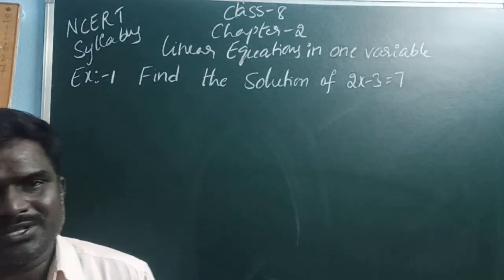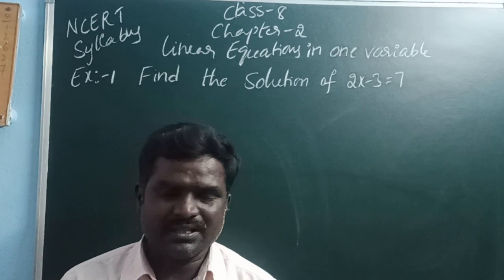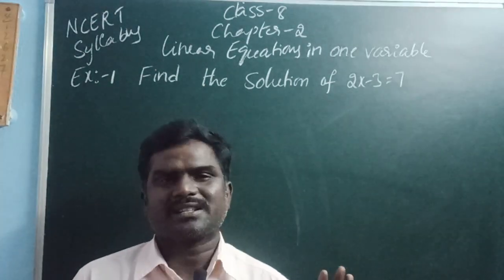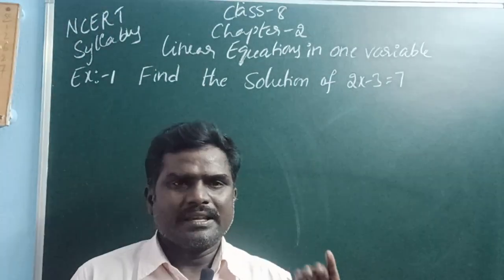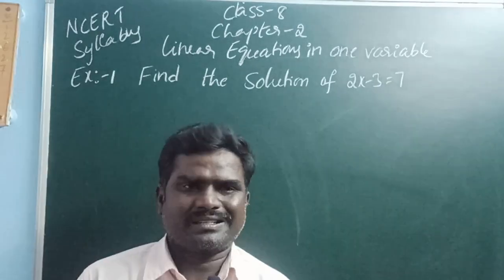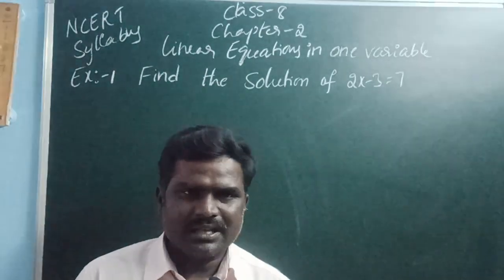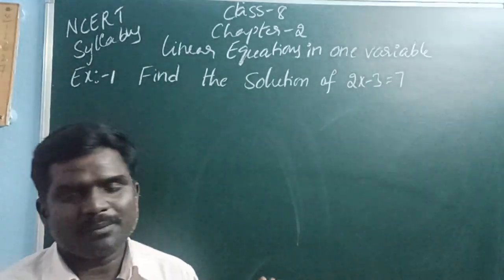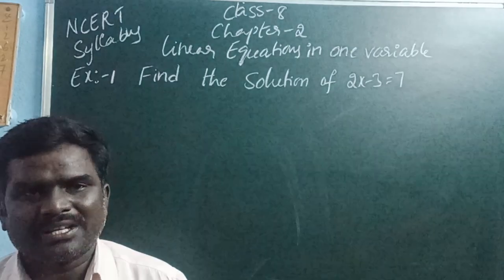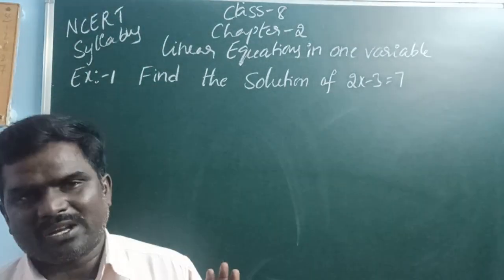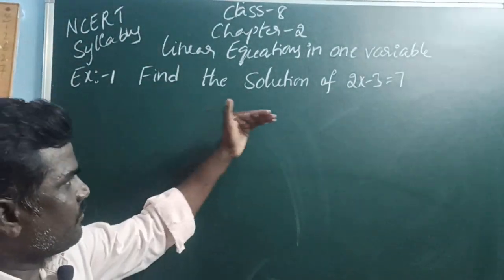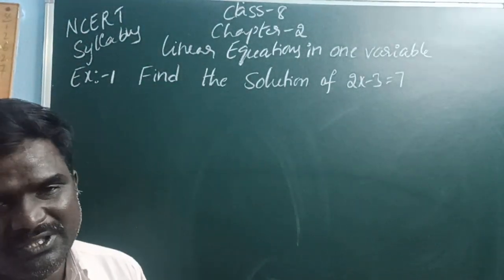To find the zeros or solutions or roots of a linear equation in one variable, there are four methods. The four methods are: first, trial and error method; next, without transform method; next, with transform method; and next, graphical method. Here, we will use the with transform method.